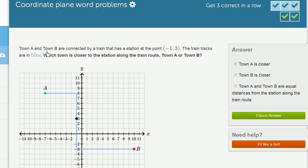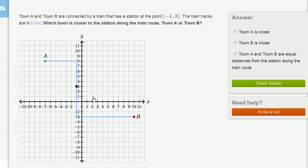Town A and town B are connected by a train that has a station at the point negative 1 comma 3. I see that. The train tracks are in blue. Fair enough. Which town is closer to the station along the train route? Town A or town B? So they're not just asking us what's the kind of crow's flight, the distance, the distance that if you were to fly. They're saying the distance, which town is closer to the station along the train route?